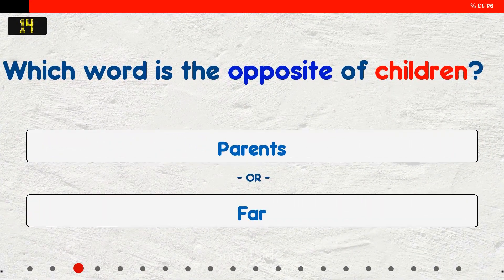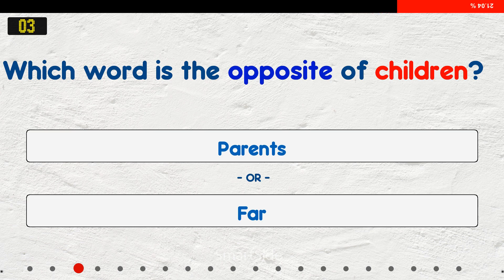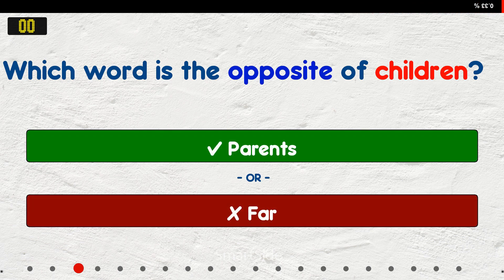Which word is the opposite of children? A. Parents. B. Par. The answer is parents.